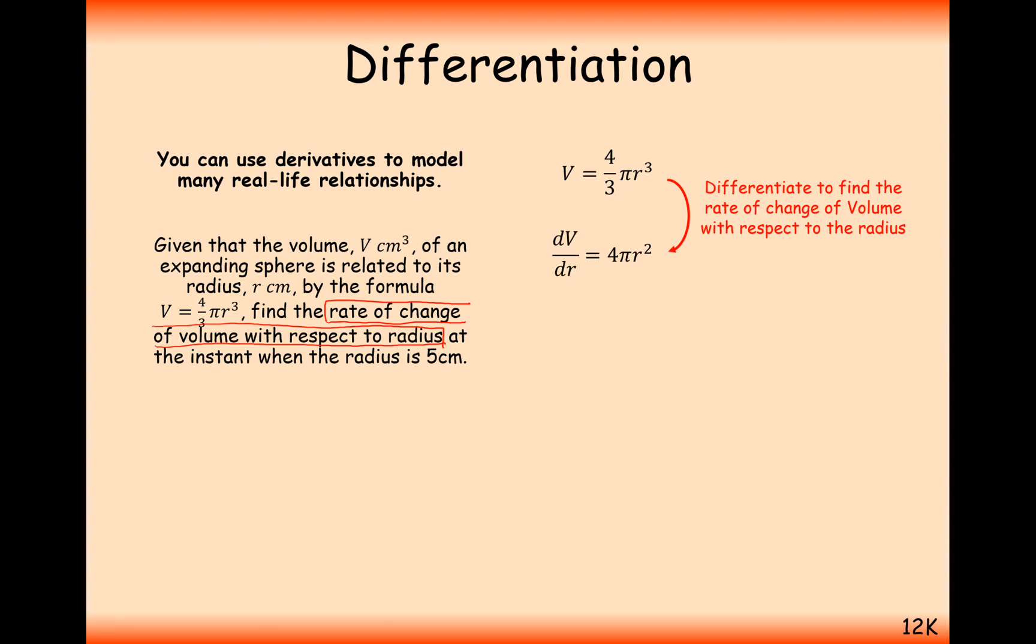So differentiate v with respect to r. We're using different letters here, but still the same principle applies. 3 times the 4 thirds will give us 4, and then pi r squared. What we're looking for now is the rate of change when the radius is 5 centimeters. So all we now need to do is plug in the value of r equals 5 and we get 314 or 100 pi.